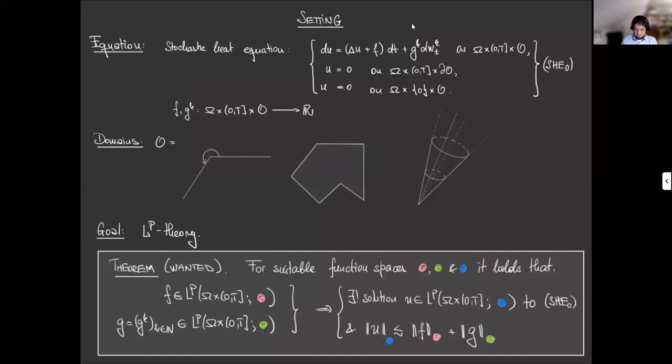So I'm searching for suitable function spaces on the domain O, which I can use to formulate a statement like this that says that if the forcing terms in the deterministic part of the equation and in the stochastic part of the equation are P-integrable stochastic processes with a certain regularity in space, which is formulated by the function spaces we have identified.